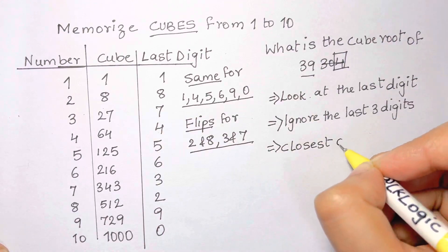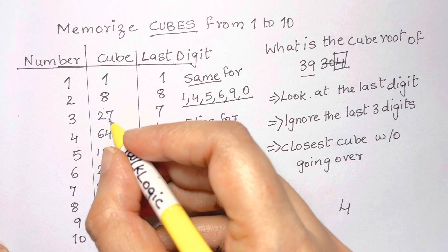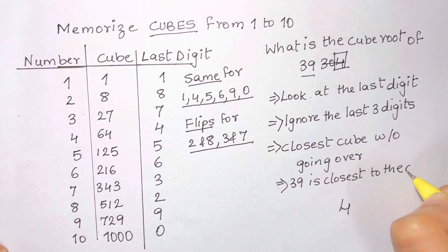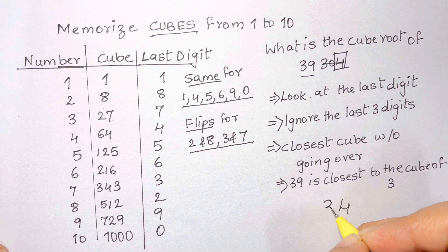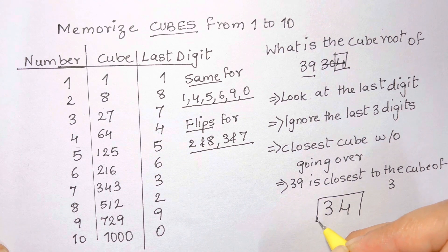The next step is we ignore the last 3 digits of our number. So in 39,304 we are just going to ignore the 304. Now we are going to find the closest cube without going over. So 39 is between 27 and 64, so it's actually closest to 27 without going over, which means it's closest to the cube of 3. And that gives us the other part of our answer, which is 3. So here we are, we put the numbers together and 34 is the cube root of 39,304.